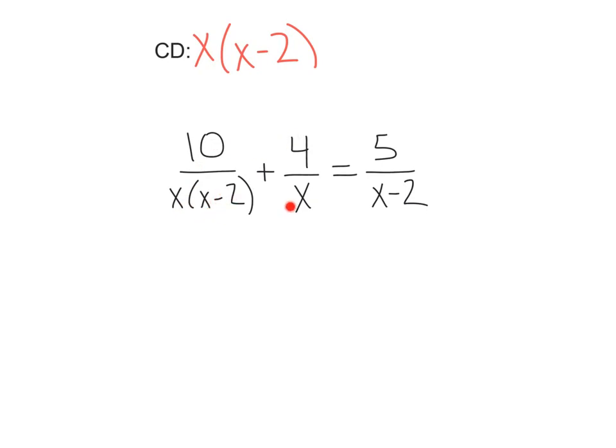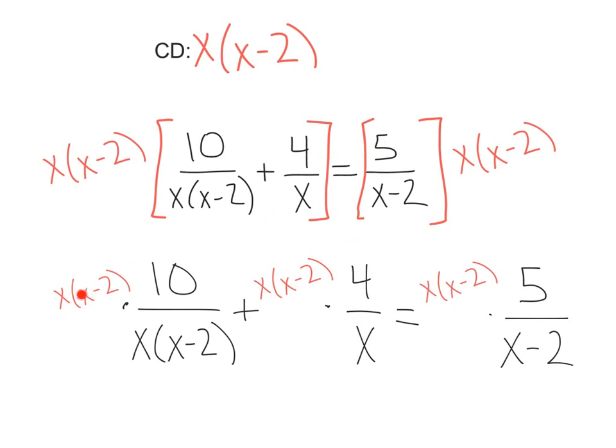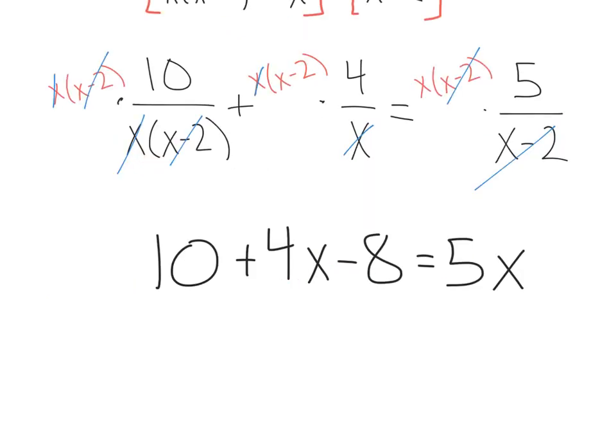10 over x times x minus 2 plus 4 over x equals 5 over x minus 2. We've got our common denominator of x times x minus 2. Let's go ahead and multiply that out. That'll bring us right here with the x times x minus 2 multiplied to each term. Now my favorite part, let's cancel stuff out. x and x is going to cancel. These x minus 2's, these x's right here, and these x minus 2's on the right.